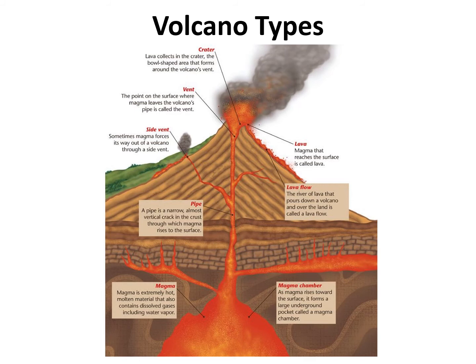Once a volcanic eruption occurs, in addition to lava, there are tons of debris in the form of volcanic ash, smoke, and toxic gases — sulfur-rich gases, carbon-rich gases, carbon dioxide, carbon monoxide, methane, and trace amounts of water vapor. All of that will be collected and ejected into the atmosphere after the volcanic eruption has occurred.